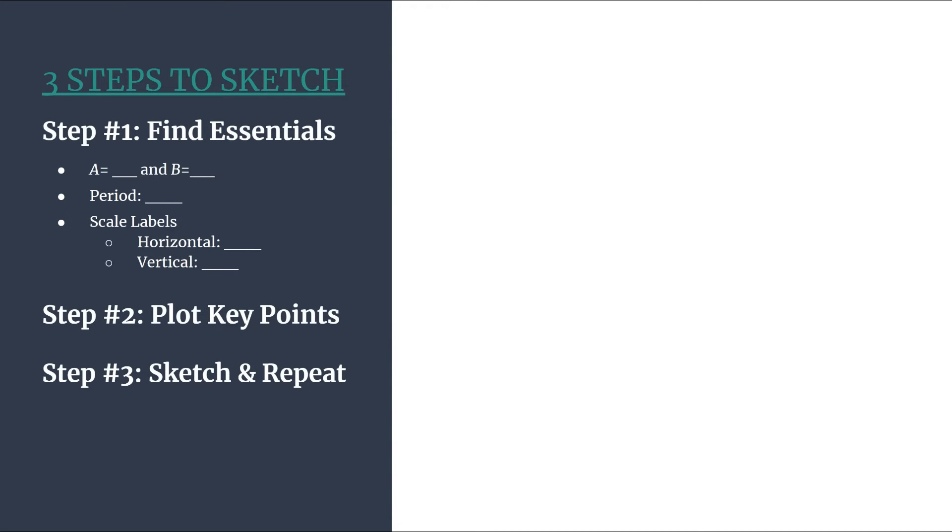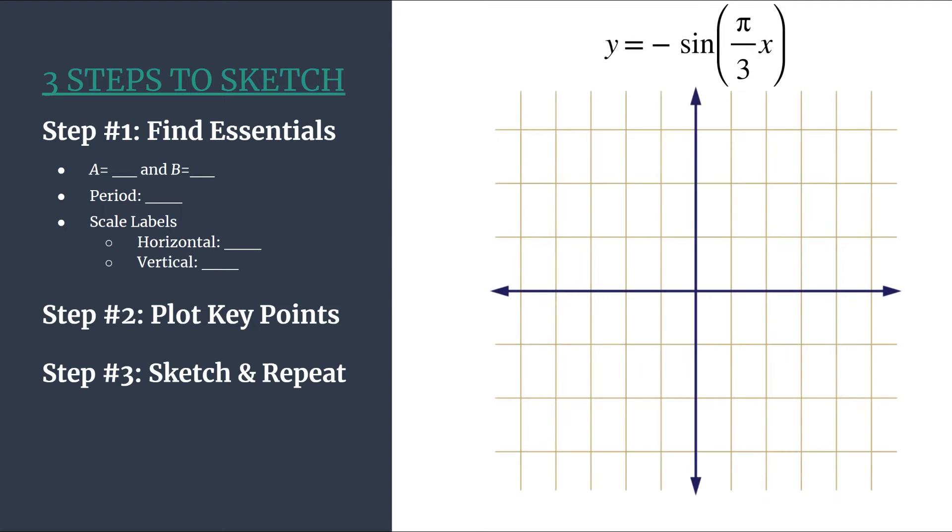Here's our method outline just so we can keep track of all our pieces and our steps. And here's a reminder of our equation and our grid. We see our equation is in the form y equals a sine of bx, so we know that this is the right method to be using. And we can jump into step one, find the essentials.